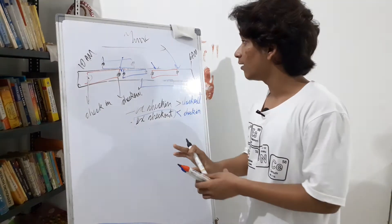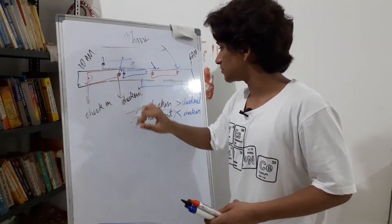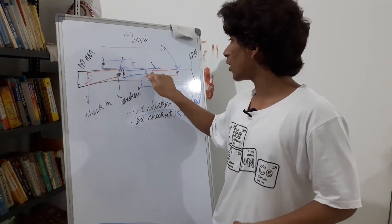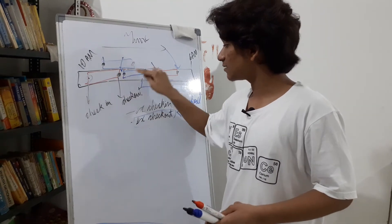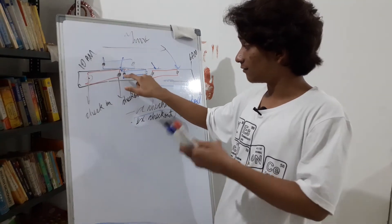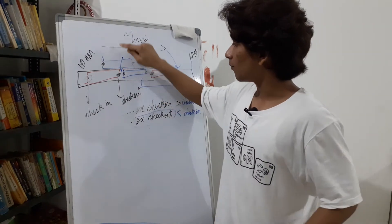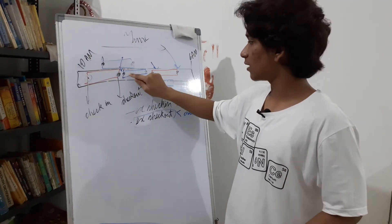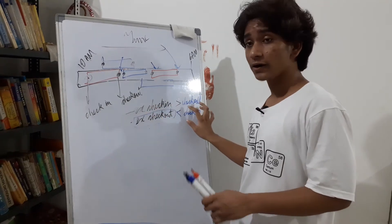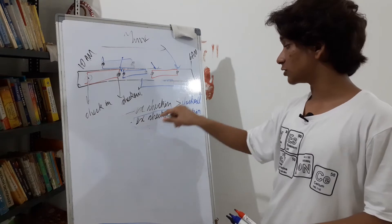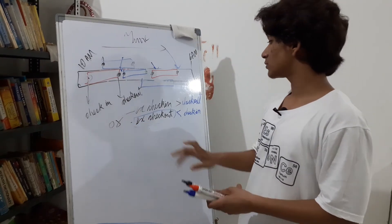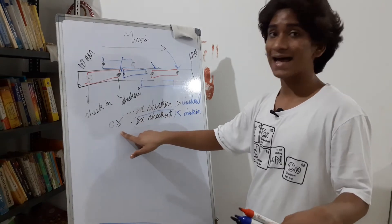Because if time flows in one direction and existing check-out < new check-in, then existing check-out is also going to be less than new check-out, since new check-out is greater than new check-in. The only two conditions to check: existing check-in > new check-out, and existing check-out < new check-in. These should be in an OR condition.